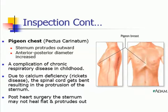Pigeon chest, also known as pectus carinatum, is a condition in which the sternum protrudes outward and the antero-posterior diameter is increased. It may be due to a complication of chronic respiratory disease in childhood. Due to calcium deficiency occurring in rickets, the spinal cord gets bent resulting in protrusion of the sternum. Or it may be due to post-heart surgery, where the sternum may not heal flat and protrudes outward.